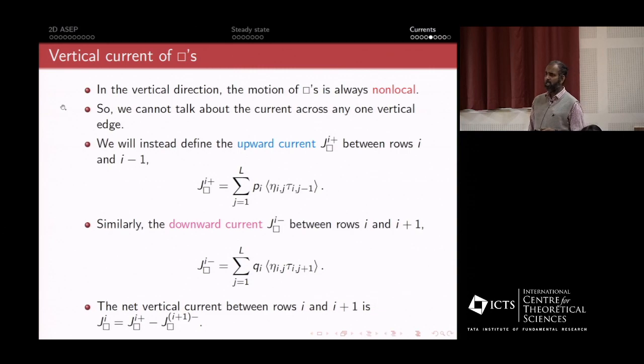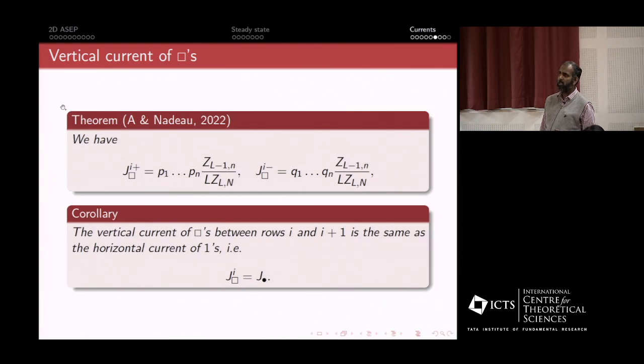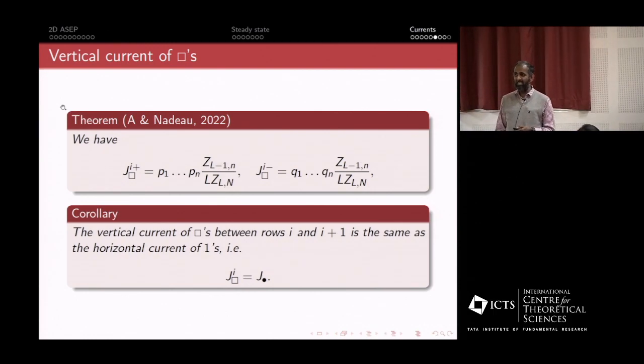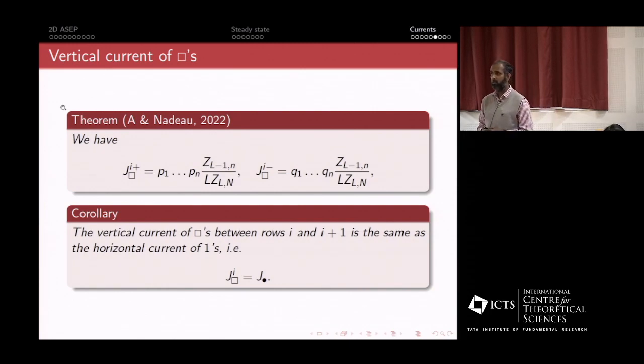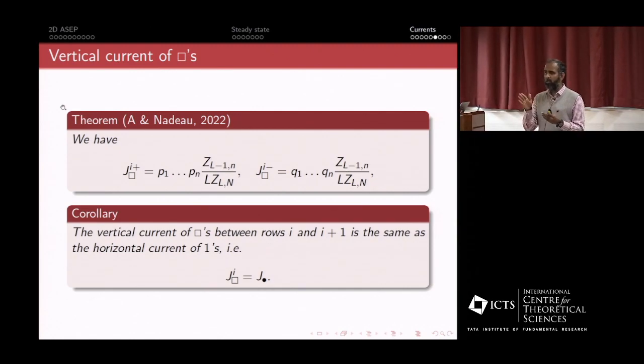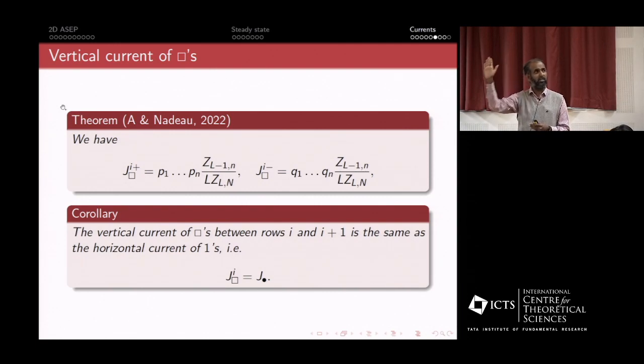We can talk about the vertical current. This vertical current is not across any edge, it's just from one row to another row. One can define an upward and a downward current. It turns out you can calculate it exactly. The upward current is the product of the Ps times the ratio of the partition functions, and the downward current is the ratio of the Qs. If you take the difference, the net current of the second class particles in the vertical direction is exactly the same as the net current of the first class particles across the horizontal. This is something completely unexpected and exact. If I remind you, the dynamics is controlled completely by the first class particles. The second class particles move completely at the mercy of the first class particles. This is what we call the Scott Russell phenomenon.